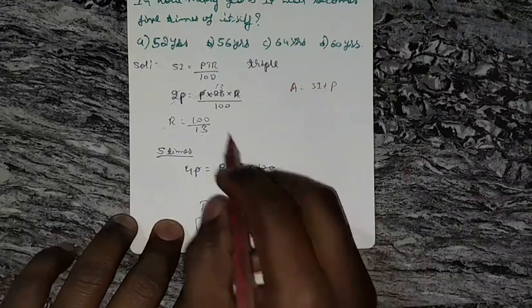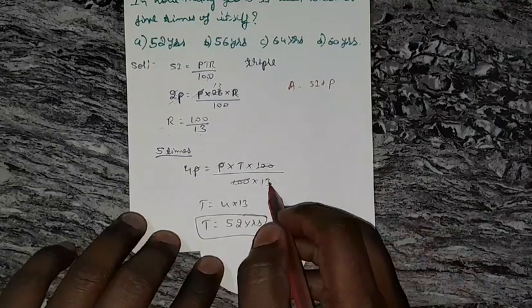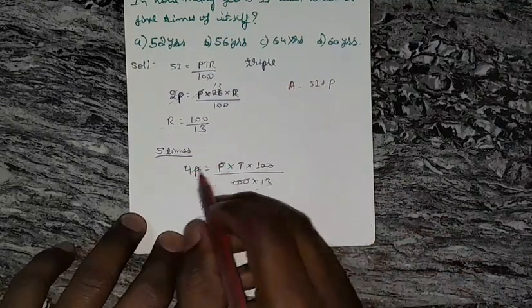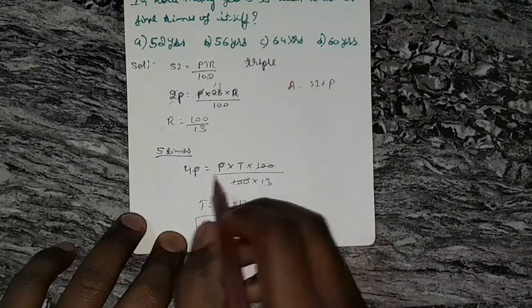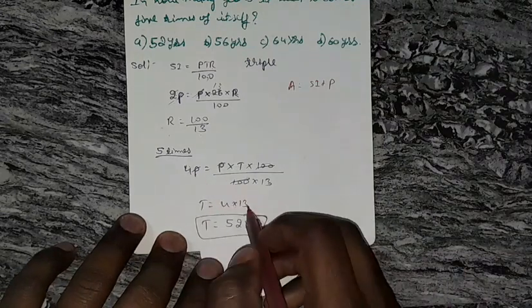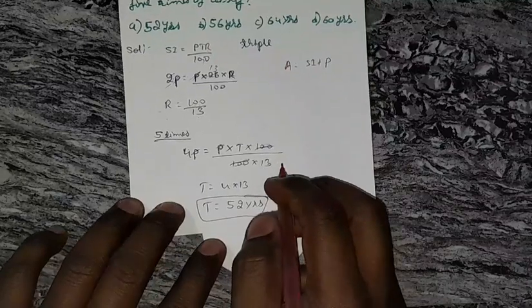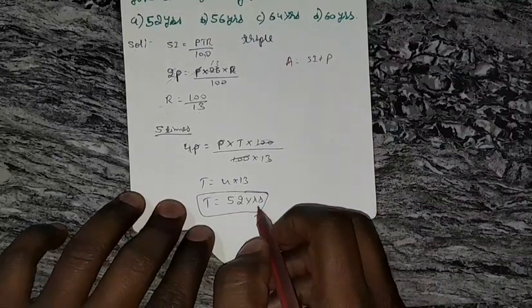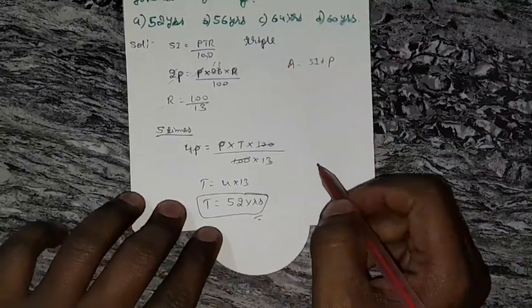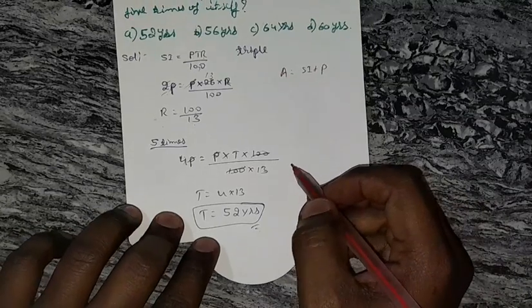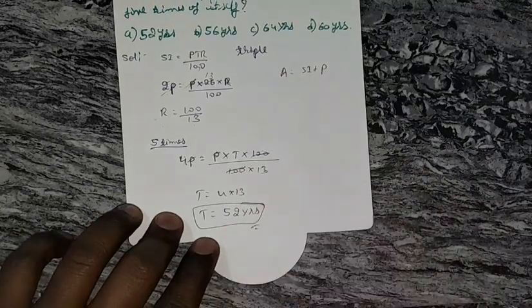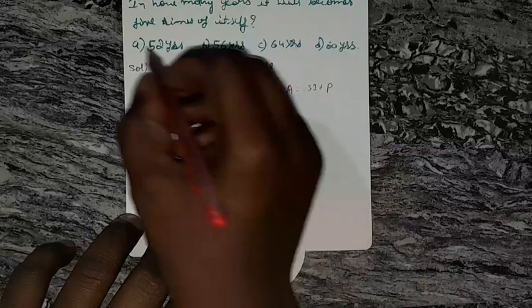Here 100 and this 100 get cancelled. 4P and P get cancelled. 13 is shifted to here, and 4 into 13 is 52. That is, in 52 years this amount will be five times the principal amount. So 52 is the required answer.